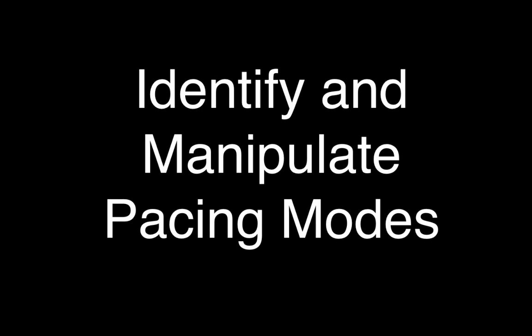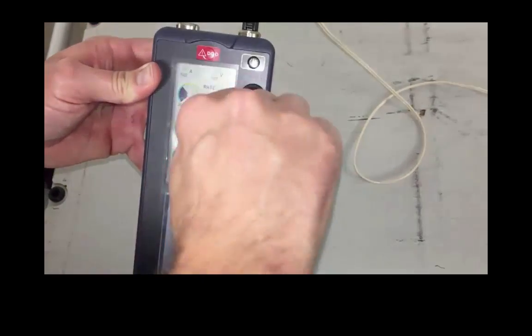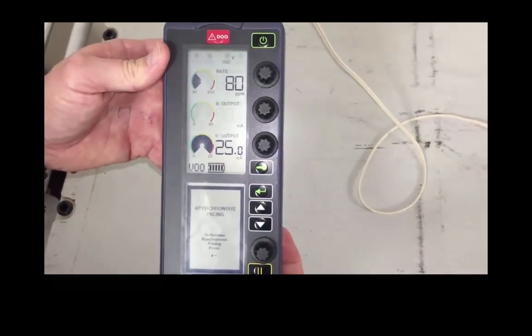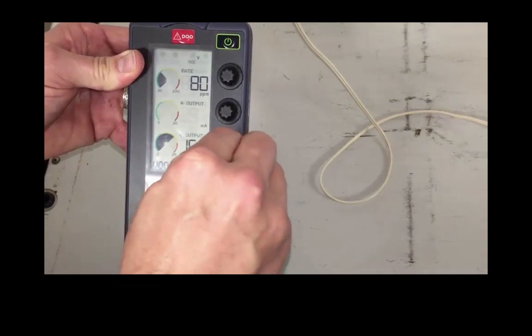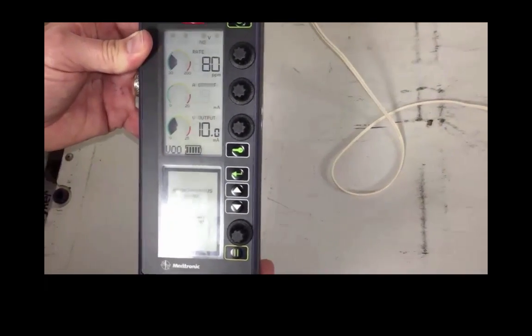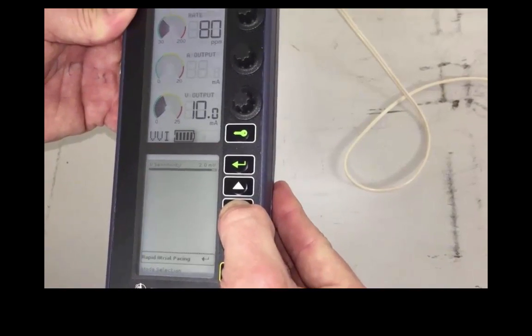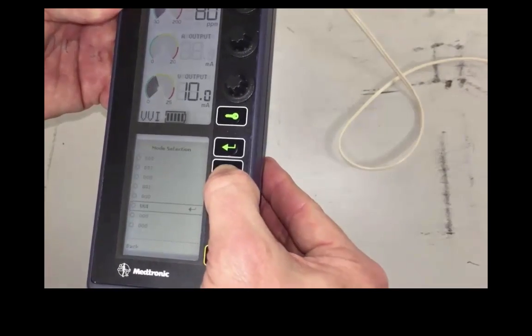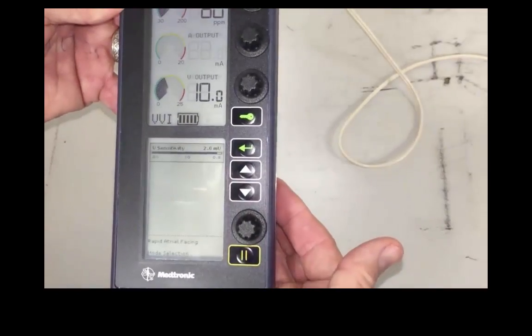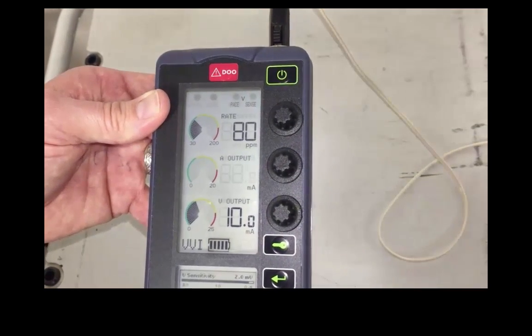In order to identify and change modes of pacing, it's important to understand where to find the mode of pacing that you are in, and a couple of different ways in which you can change the mode. The mode is always going to be in the upper screen in the lower left-hand corner. In this instance, Dave has changed the mode from a DOO, dual chamber, to a VOO, single chamber, simply by taking the atrial output to zero. The other way to manipulate the modes is on the lower screen where you can go to the menu and select which mode of pacing that you want to be in. In order to do this, it is important to understand the three-letter identifiers associated with pacing that were discussed earlier in order to utilize temporary pacing to your advantage.